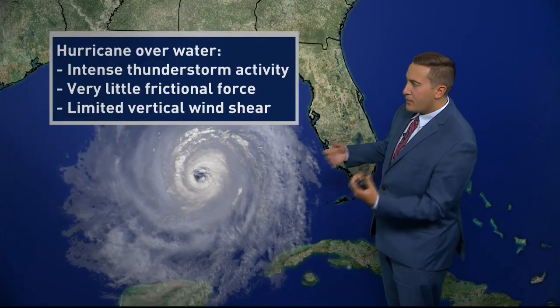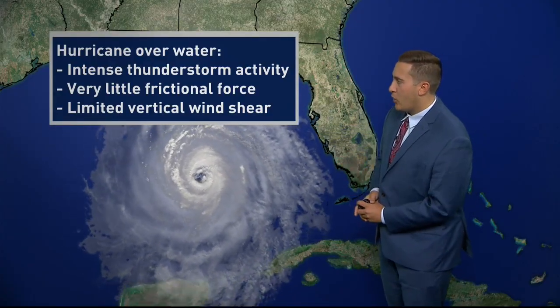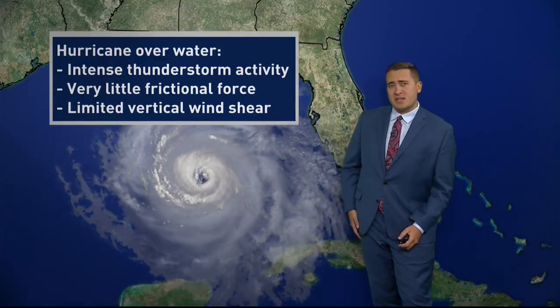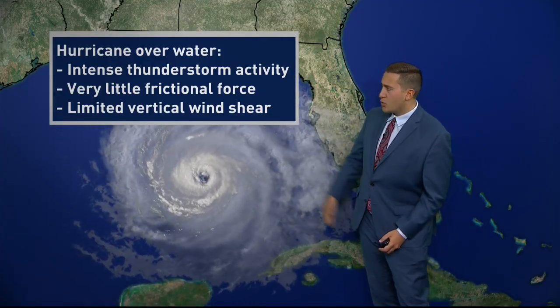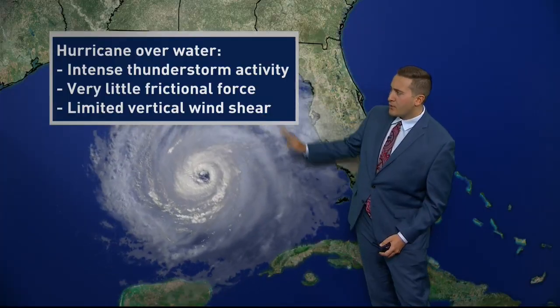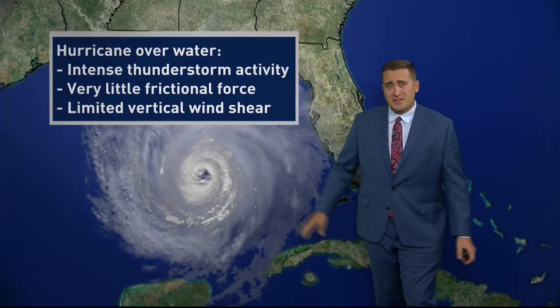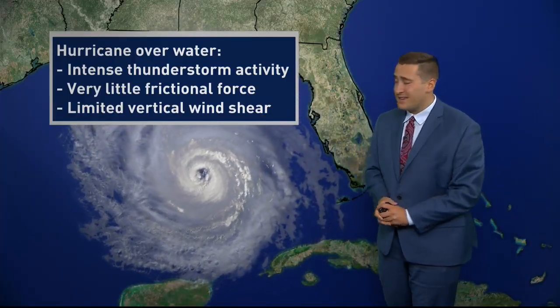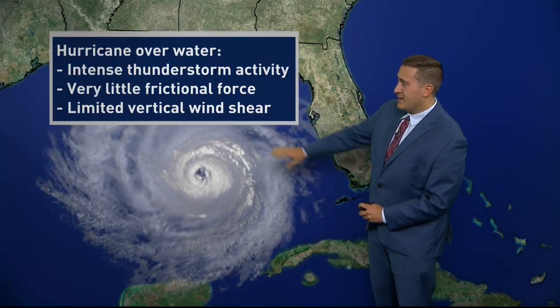So let's talk about a hurricane hypothetically over the Gulf of Mexico. Intense thunderstorm activity you see with this storm. Very little frictional force — the surface of the water really doesn't vary like it does on land.